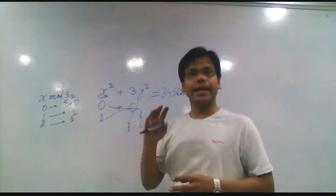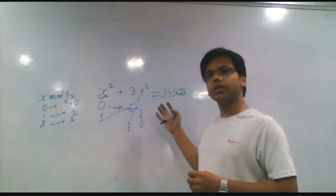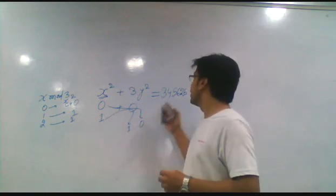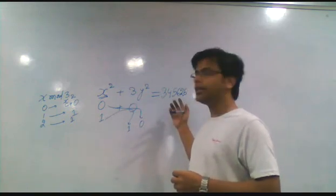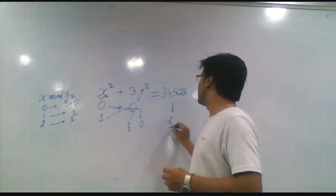We cannot get any other remainder. Check the remainder for the RHS divided by 3. When we divide this number by 3, our remainder is 2.